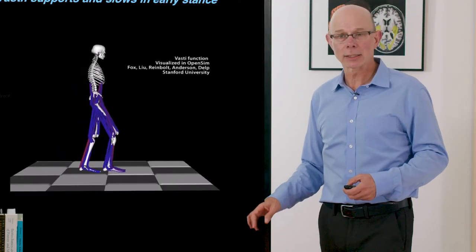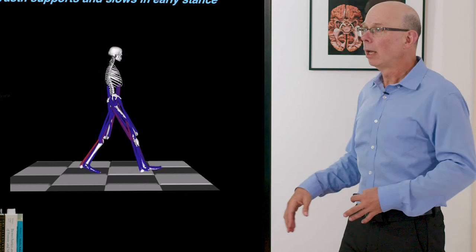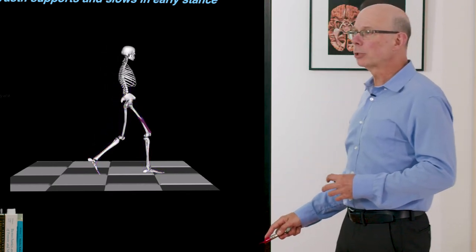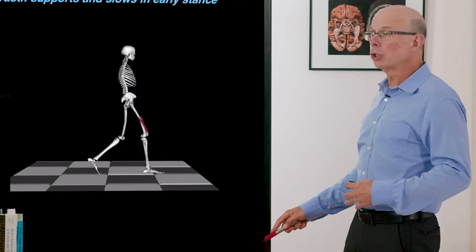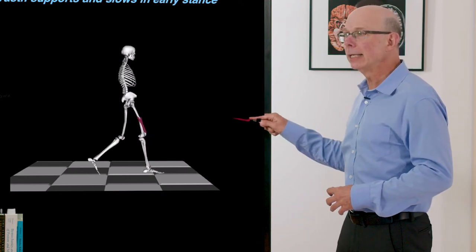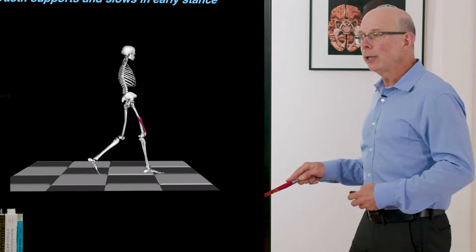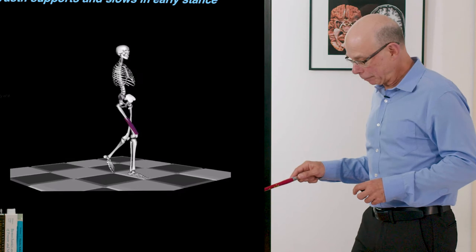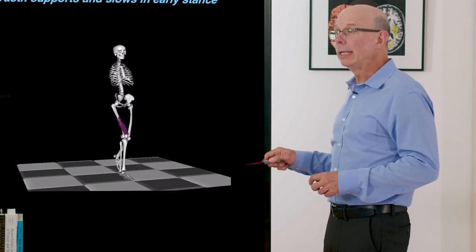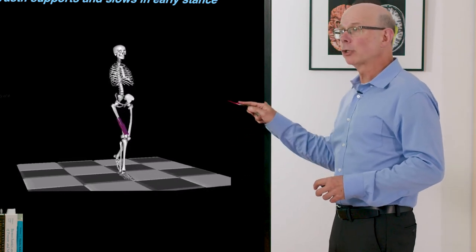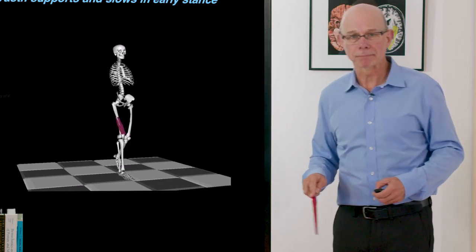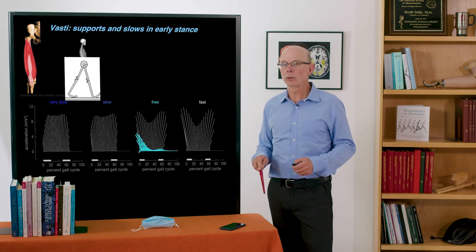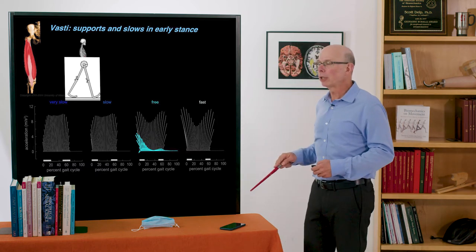So let's take a look at VASTI. The three big quadriceps. It is on in early stance. Remember that. It supports body weight. It slows your mass center. It extends the knee as you can see. And interestingly it moves many degrees of freedom. It not only generates a knee extension moment but it also generates accelerations at the hip. So VASTI supports and slows. And you can see that here in the ground reaction force.